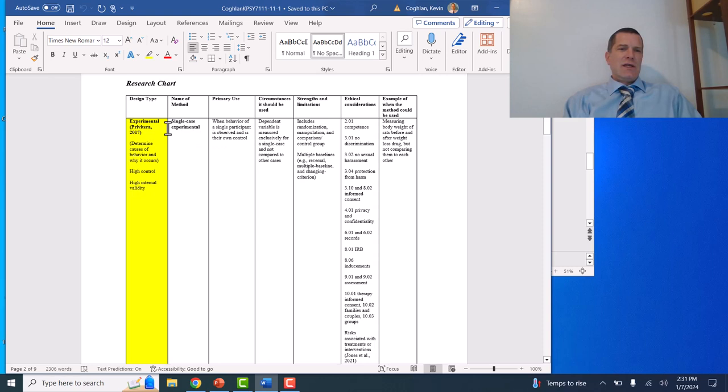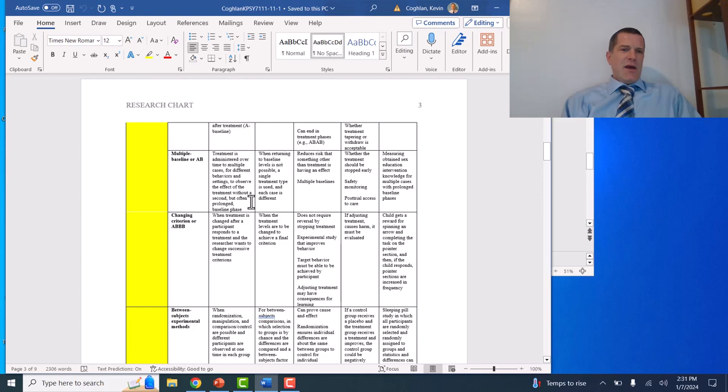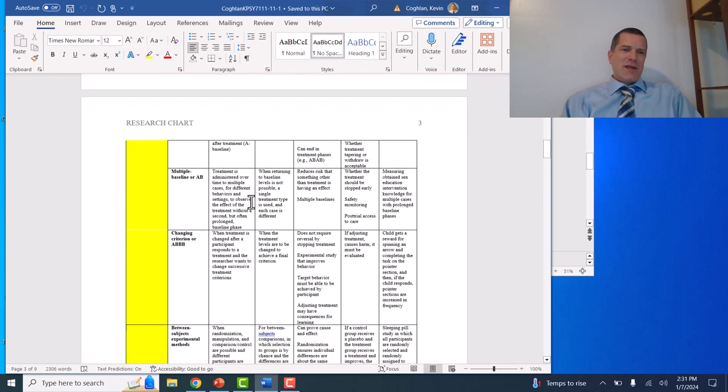For example, your book introduces things like case studies, or single-case experimental studies, when behavior of a single participant is observed and it's their own control. We can also look at things like reversal or ABA: you have a baseline, a treatment, and then you measure it again. Multiple baselines, and I don't want to bore you with all of this stuff.